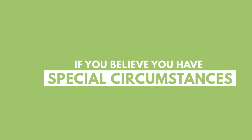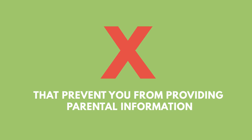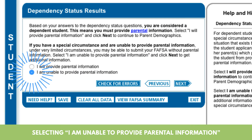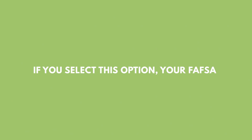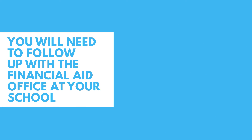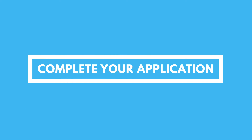However, if you believe you have special circumstances that prevent you from providing parental information, you still have the option of submitting your FAFSA by selecting 'I am unable to provide parental information.' If you select this option, your FAFSA will be considered incomplete. You will need to follow up with the financial aid office at your school and provide documentation explaining your special circumstances in order to complete your application.